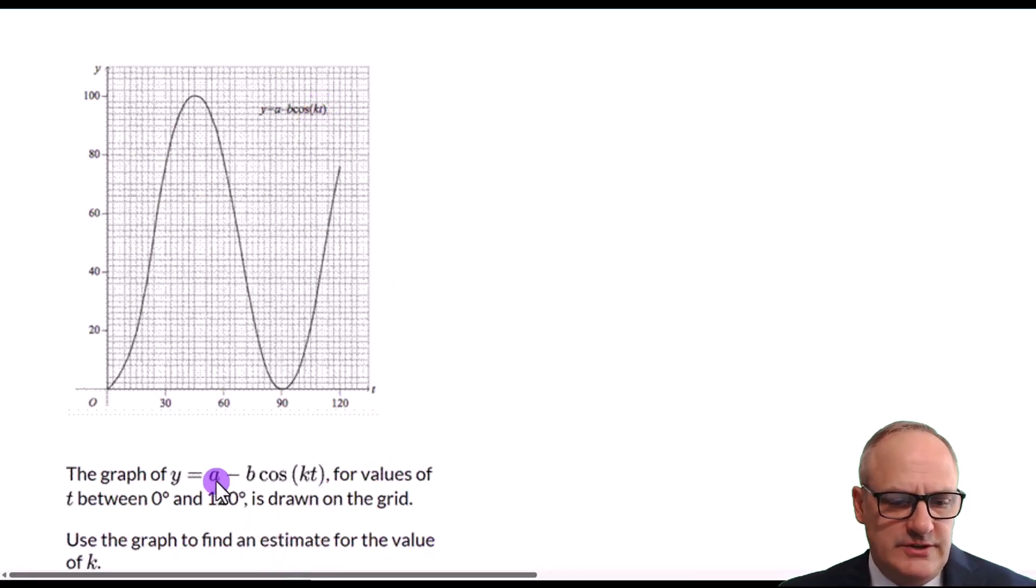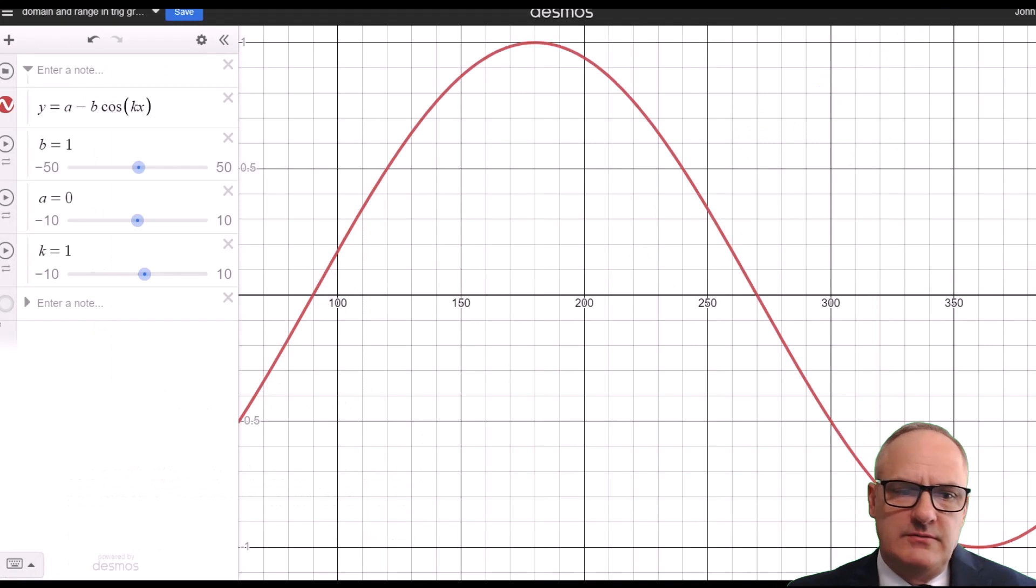So what we need to do, we need to realize what a, b, and k do to our graph. So let's again go to our old friend Desmos and we can see I've drawn y equals a minus b cos kx. And what I've done is I started off with b is equal to 1, so we get minus cos x. I've got a minus here to be the same, and what the minus does is it reflects in the x-axis.